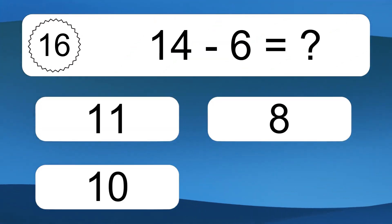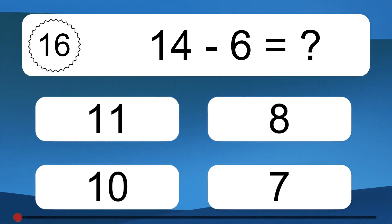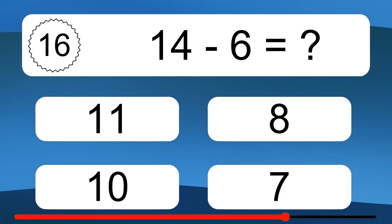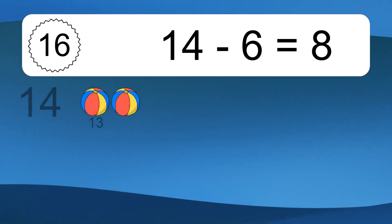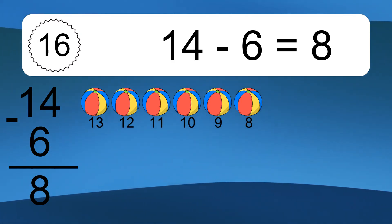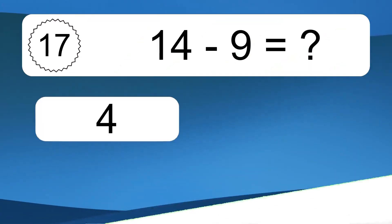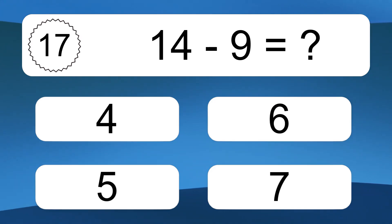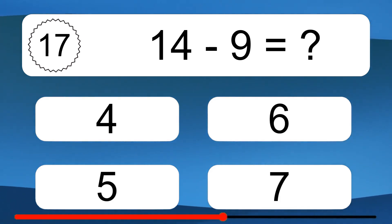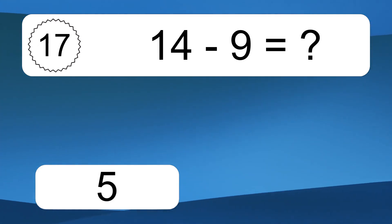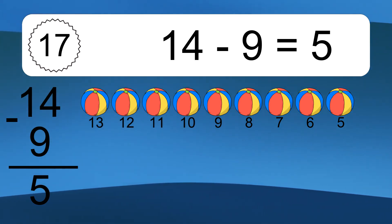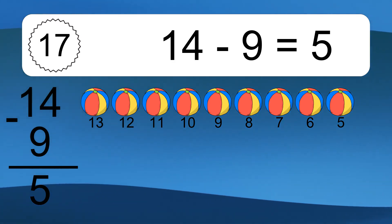14 minus 6 equals what? 14 minus 6 equals 8. Let's count it: 13, 12, 11, 10, 9, 8. 14 minus 9 equals what? Let's count it: 13, 12, 11, 10, 9, 8, 7, 6, 5.